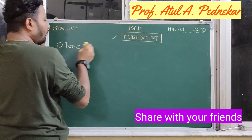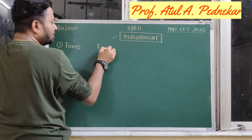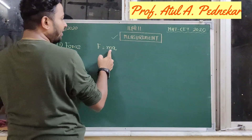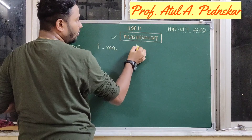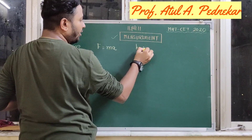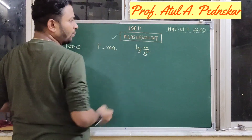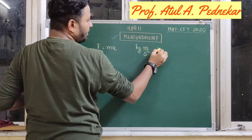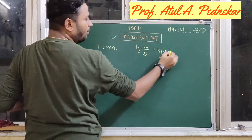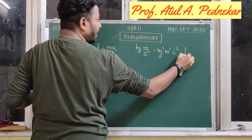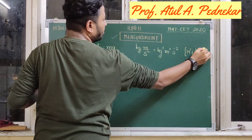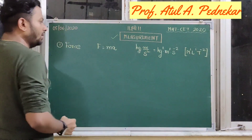Force is calculated as mass into acceleration. So I know the formula for force. The unit for mass is kilogram. The unit for acceleration is meter per second square. So we can write this as kilogram raised to 1, meter raised to 1, second square in the denominator — so we write S minus 2. The dimensions of force are M1, L1, and T to the power of minus 2.